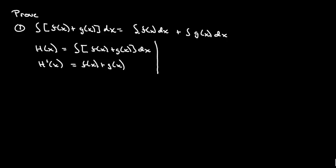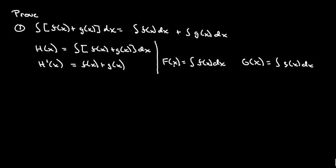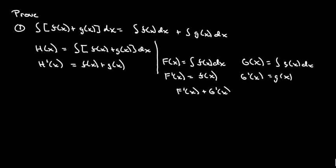Now let's take a look at the other side. Let's say we have some function large F of x and that's equal to the integral of f of x dx, and then we've got another function, large G of x, and that is equal to the antiderivative of g of x dx. So when we differentiate, F prime of x gives us f of x, and G prime of x gives us g of x, so F prime of x plus G prime of x is equal to f of x plus g of x.